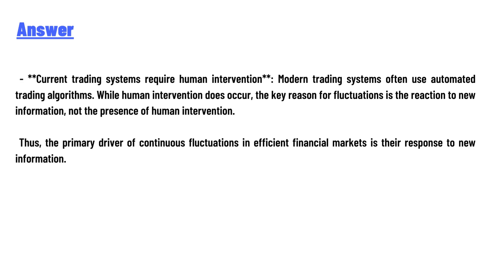Regarding current trading systems requiring human intervention: modern trading systems often use automated trading algorithms. While human intervention does occur, the key reason for fluctuation is the reaction to new information, not the presence of human intervention. Thus, the primary driver of continuous fluctuation in efficient financial markets is their response to new information.